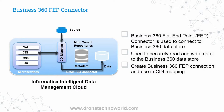Now let's understand the FEP connector. Similar to the Business 360 connector, FEP also uses a CDI component to invoke the connection. We can use this Business 360 FEP connector in a CDI mapping, which will read data from the source — which can be on-premise or cloud — and then load the data into the IDMC data store. This connector is also used to read and write data securely. FEP stands for Flat Endpoint, so Business 360 FEP is the Business 360 Flat Endpoint connector, and it is used to connect to the Business 360 data store.